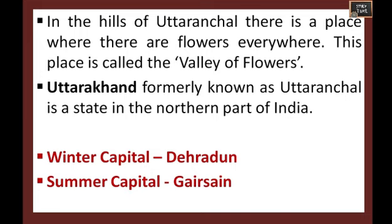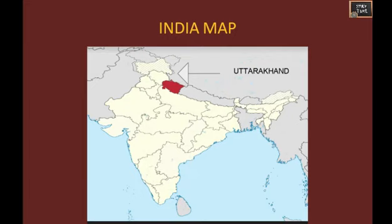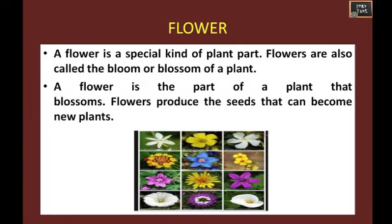Uttarakhand, formerly known as Uttaranchal, is a state in the northern part of India. The winter capital of this place is Dehradun and the summer capital is Gairsain. On the India map, this place is highlighted in red — that is Uttarakhand.